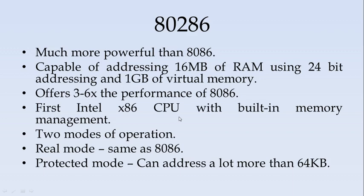The first mode is real mode, which is the same as the 8086 processor, in which all the segments and registers are similar to 8086. In protected mode, it can access a higher address space — much more than the 64 KB limit of 8086.